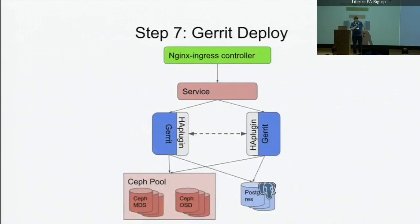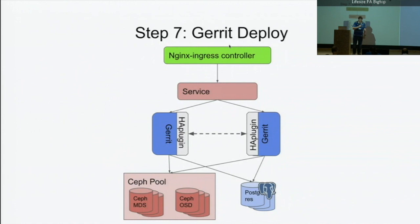So step seven, finally, actually deploying Gert. You've got all these components ready to help you serve your application. This is more or less the application architecture you end up with. You can have multi-master with HA plugin, use your Ceph pool to create the shared file system behind them. If you need Postgres — because you don't have a version of Gert that doesn't need databases — your NGINX controller has SSL termination sorted for you so you don't have to deal with that internally in the application. After all that effort and complexity up front, from then on every time you run an application it's as simple as that — a three-tier application concept.